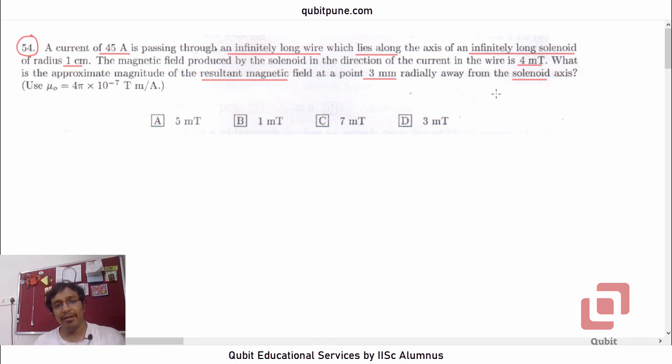Use μ₀ as 4π × 10⁻⁷ tesla meter per ampere. Options are 5 mT, 1 mT, 7 mT and 3 mT. So, in this case, there are two things that are going to produce the magnetic field. The net magnetic field at any point there will be the magnetic field due to the current carrying wire and the magnetic field due to solenoid. Let us first find out the field due to wire.